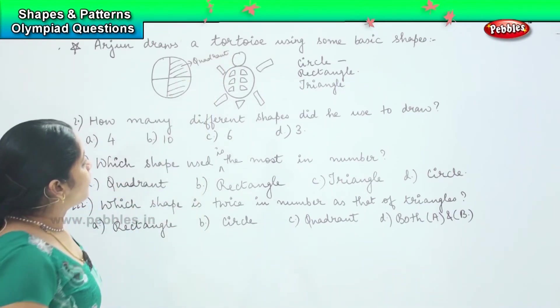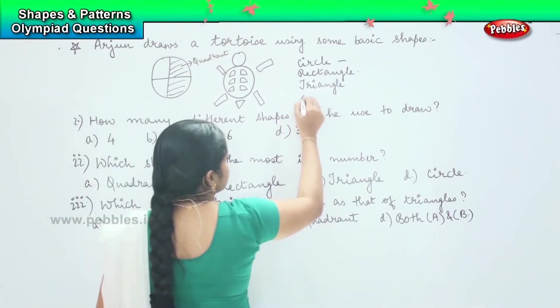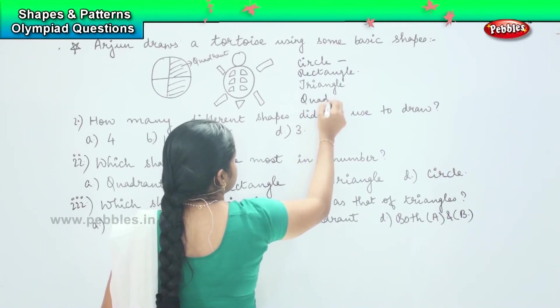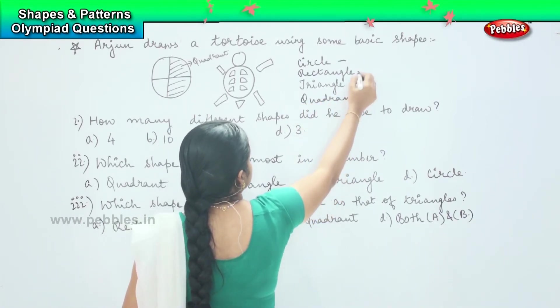Fine, so how many quadrants has he used here? So the last one is the quadrant. So let us count the shapes.